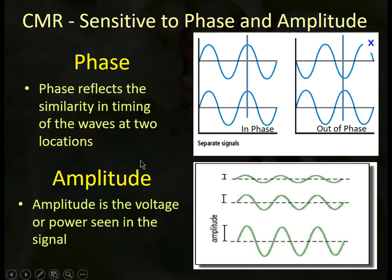Common mode rejection is also somewhat sensitive to amplitude. If the amplitude is significantly different, then both waves will be retained. If the amplitude is the same and the waves are synchronous, they're going to be rejected. In this example, the waves are synchronous but the amplitude is significantly different, and therefore they look different to the amplifier and components of those waves will be retained.